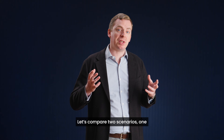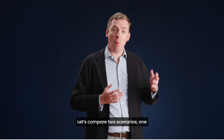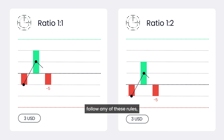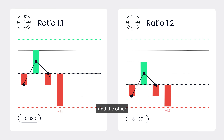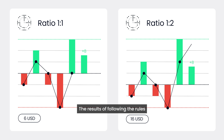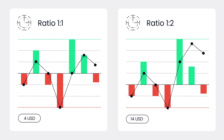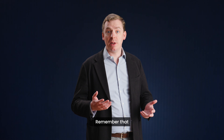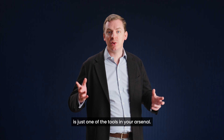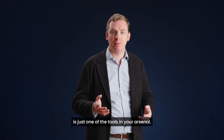Let's compare two scenarios: one where the trader doesn't follow any of these rules, and the other where the rules are followed in order. The results of following the rules will almost always be better. Remember that a good ratio is just one of the tools in your arsenal.